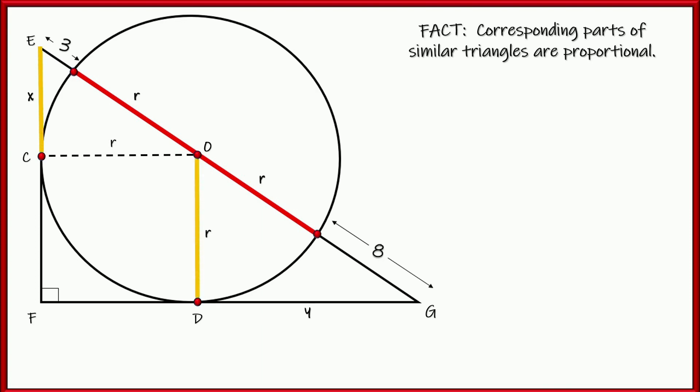Now the reason we need that is because corresponding parts of similar triangles are proportional, so E to C and O to D, those are corresponding, and C to O and D to G are corresponding. We're going to call CE, X, and DO, well that's the radius, but DG is Y. So if we set up our ratio, we have X over R equals R over Y, and we can simplify that, multiplying both sides by Y and by R, and we get our first equation, XY equals R squared. That's cool. Let's tuck that away and use that for, well here in the near future, right?